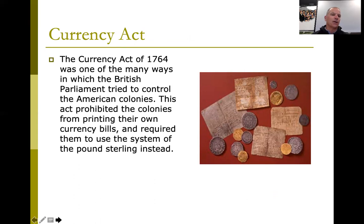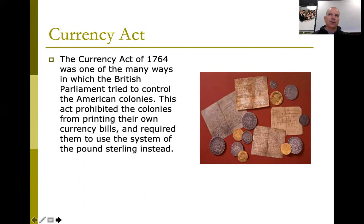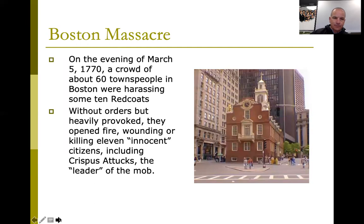The Currency Act, passed in 1764, demanded that all products bought from England had to be paid for in British pounds. The British pound was the only universally accepted currency in the colonies — each colony had its own money that wasn't accepted elsewhere, but the pound worked everywhere. Requiring payment in British pounds would drain money away from the colonies, and they didn't like that.